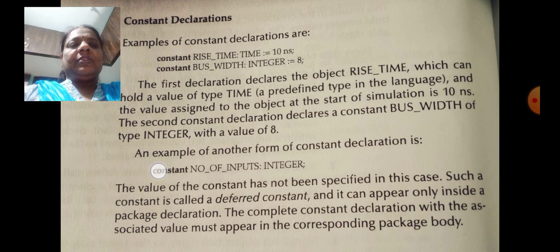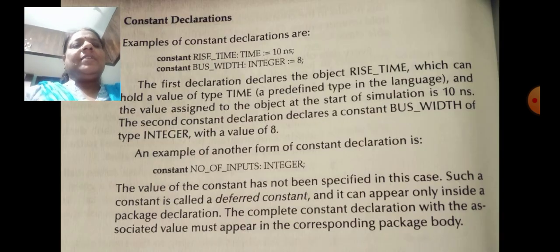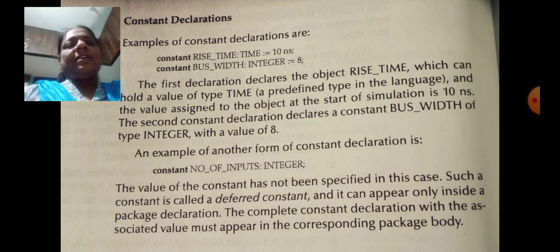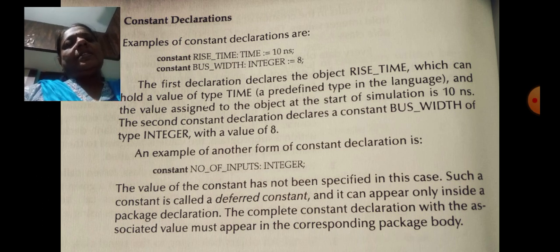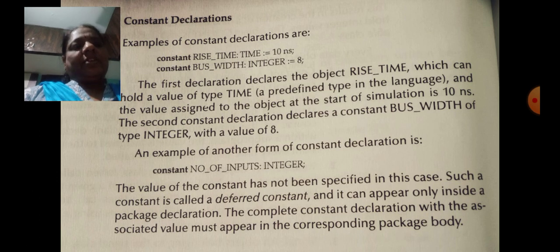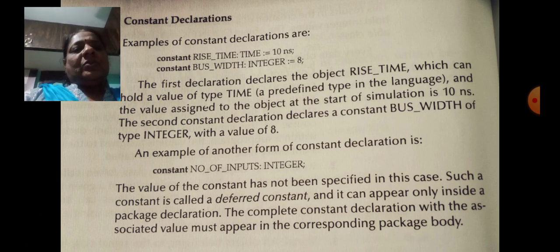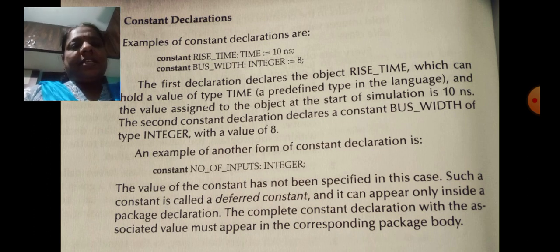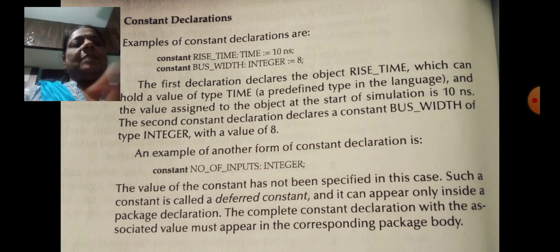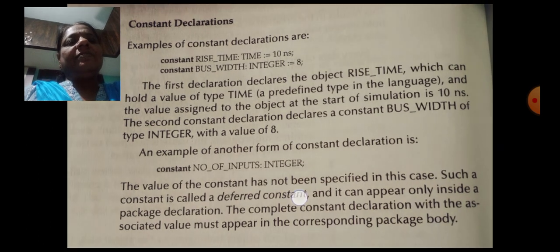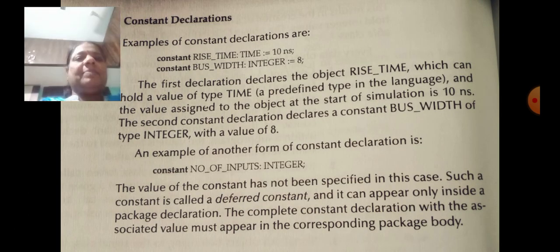Here is another example: it starts with 'constant', then 'number_of_inputs' as the object name, and it is of type integer. The difference here is that no value is assigned to this constant. This type of constant declaration is used only in package declarations, and it is called a deferred constant — remember that.